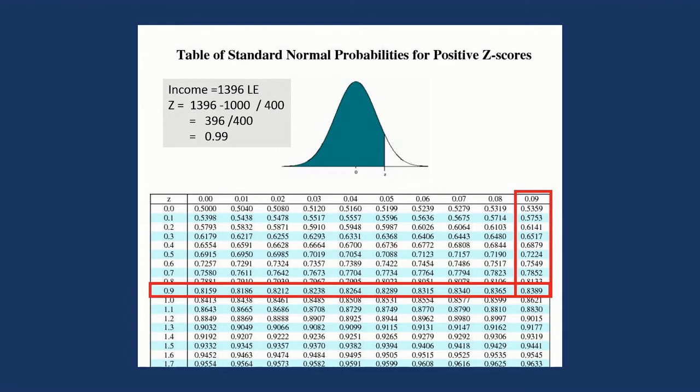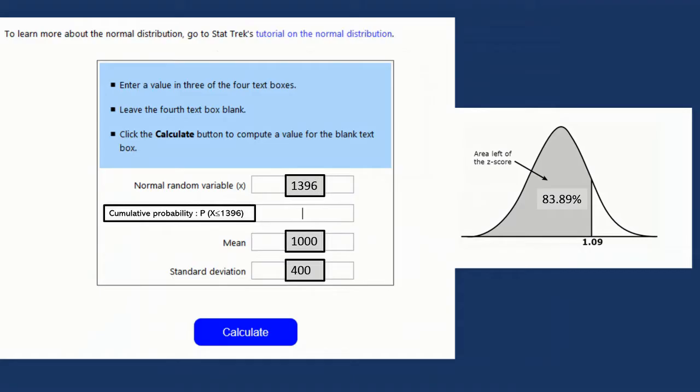So this is the table. We call it the Z table. Here 0.99. So 9% - first 9 is here, and second 9 is there, and the value is there. So it's written here 83.89%. Or you can go to locations on the internet that can make the calculation for you.